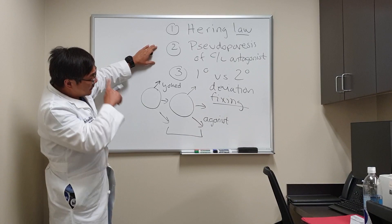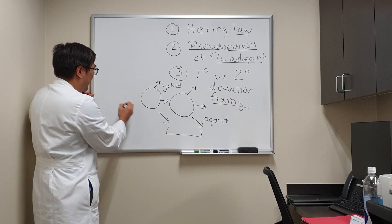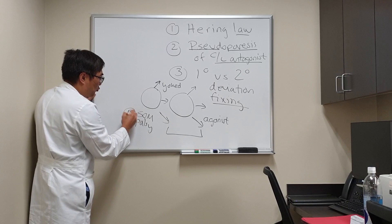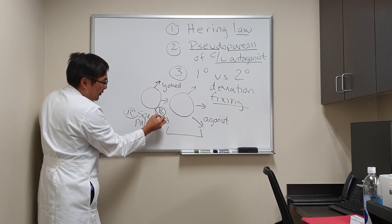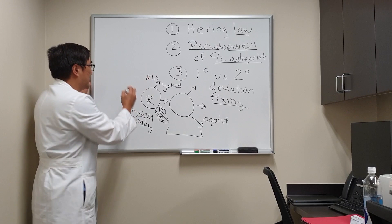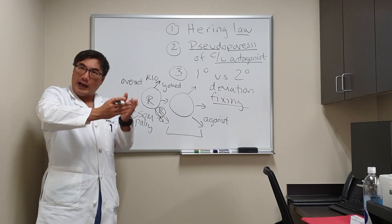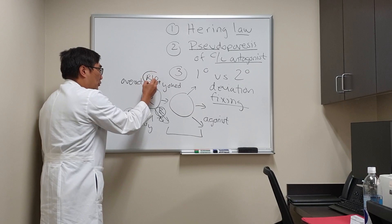Because of Hering's Law, we might get a pseudoparesis — pseudo means false — and it'll look like a paralysis of the contralateral antagonist. For a fourth nerve palsy, which is the superior oblique muscle palsy, we'll use the example of a right superior oblique palsy. The ipsilateral right eye's inferior oblique muscle will appear to overact because its antagonist is weak. When they look up and to the left, because the superior oblique is weak, there's less direct opposition from the ipsilateral antagonist, which is the right inferior oblique.